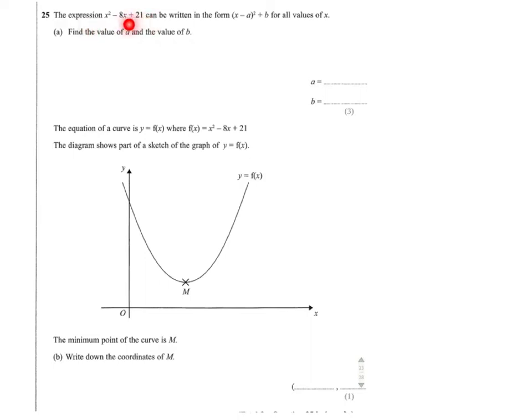So the expression x squared minus 8x plus 21 can be written in the form x minus a squared plus b for all values of x. Find the value of a and b. So what we need to do here is complete the square.